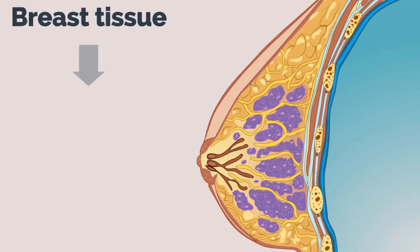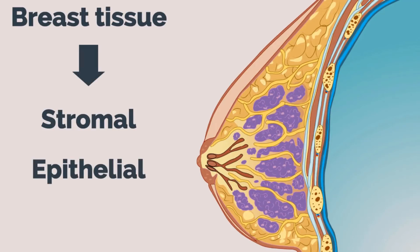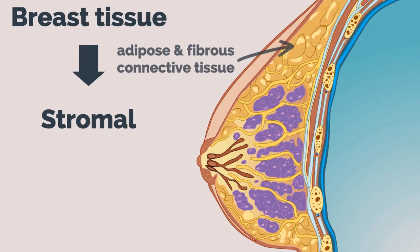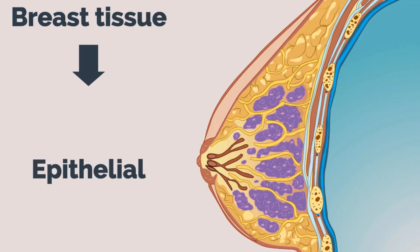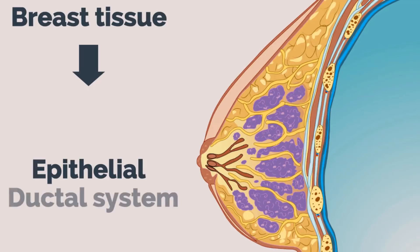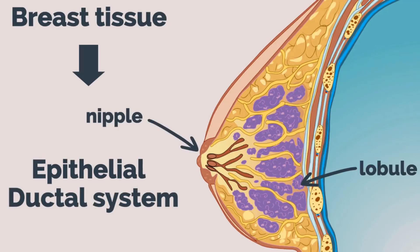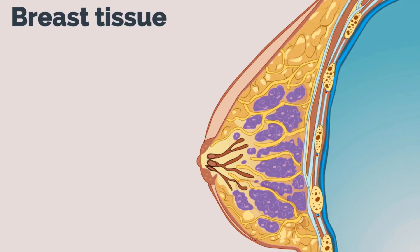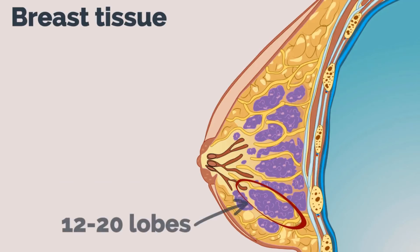Breast tissue is composed of both stromal and epithelial tissue. The stromal tissues comprise the majority of breast volume and include adipose and fibrous connective tissue. The epithelial tissue is a ductal system which transports milk from the lobules to the nipple. Each breast has about 12 to 20 lobes.